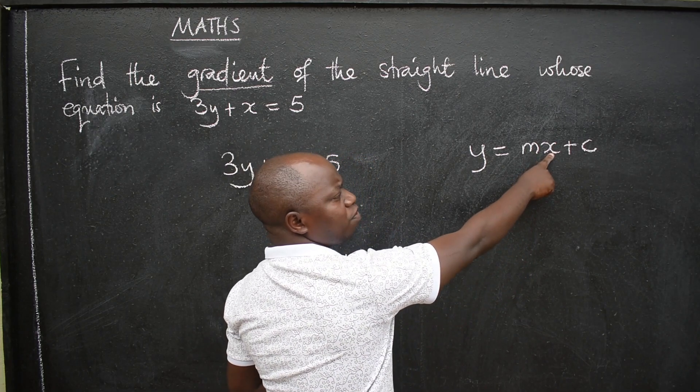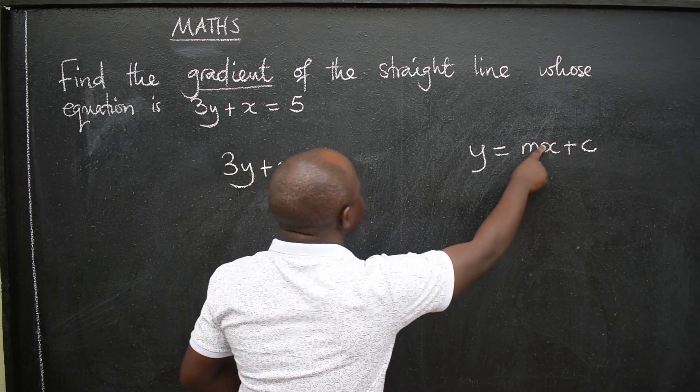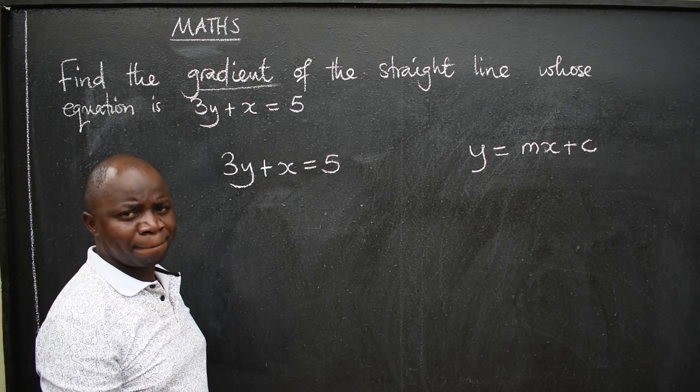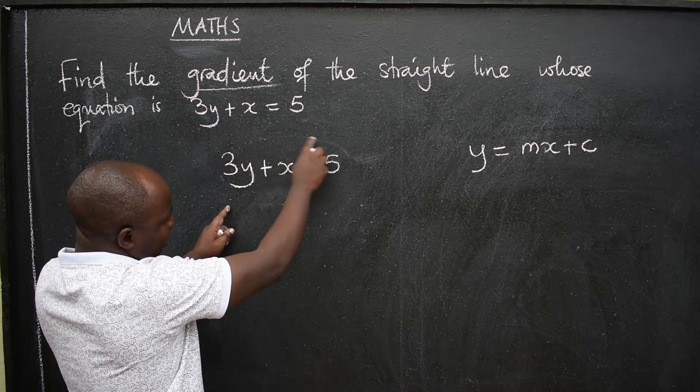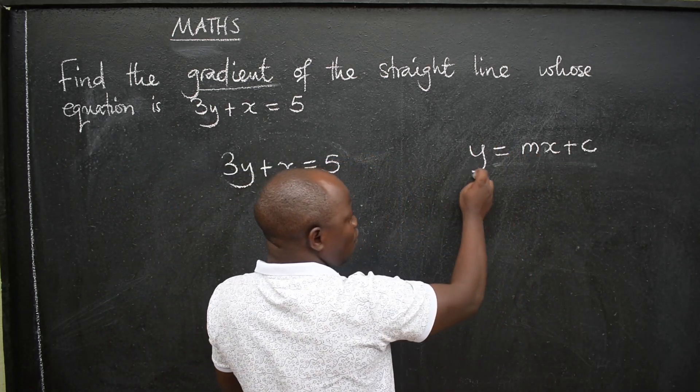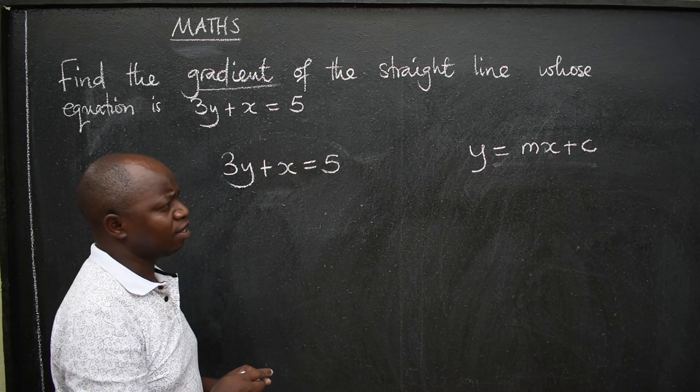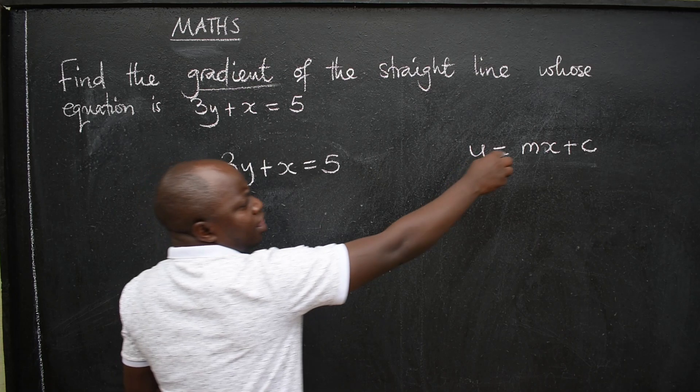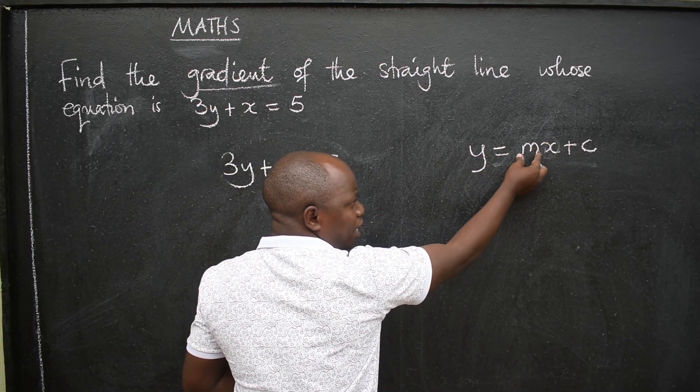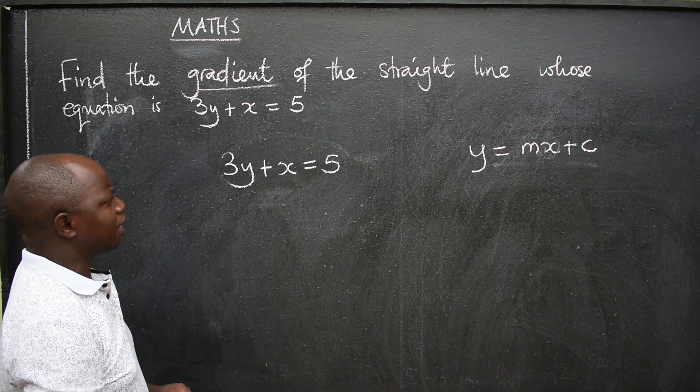Then the coefficient of x is your gradient. Is that clear? So we are going to express this given equation in this form where we make y subject of the formula. Then the coefficient of x, the number that will be here, will be our gradient. So let's do that.